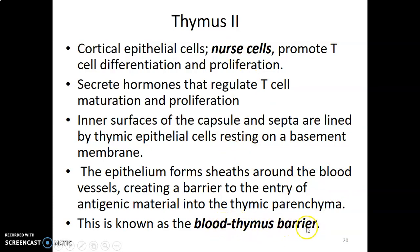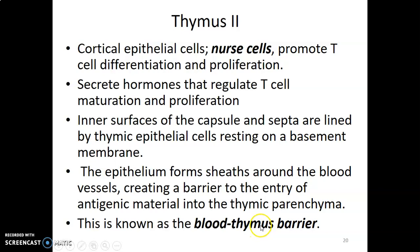The blood-thymus barrier acts as a sheath to prevent antigenic material in the blood from entering the thymus parenchyma. Blood arrives with antigens, but you don't want those antigens entering the parenchyma of the thymus. The barrier is formed by nurse cells lying on the basement membrane and capillary endothelial cells lying on the basement membrane.